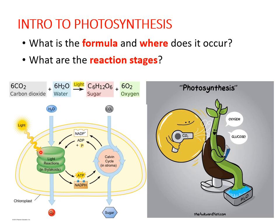When we think about photosynthesis, I want you to break it down into two reactions: you have the light reactions and you have the dark reactions, which are also called the Calvin cycle. Just as the name suggests, the light reactions will require sunlight whereas the dark reactions will not. The main purpose of the light reactions is the oxidation of water to produce oxygen, whereas the dark reactions focus on producing sugars by the fixation of carbon dioxide.